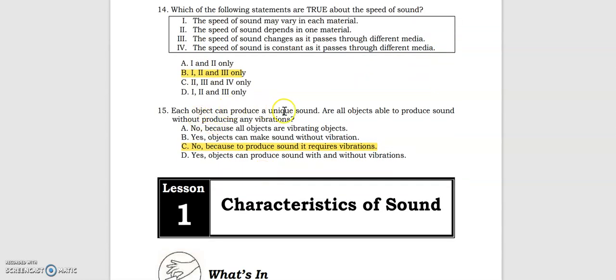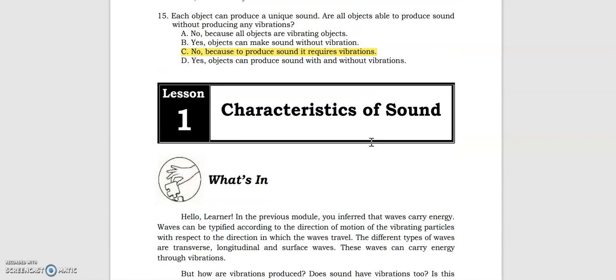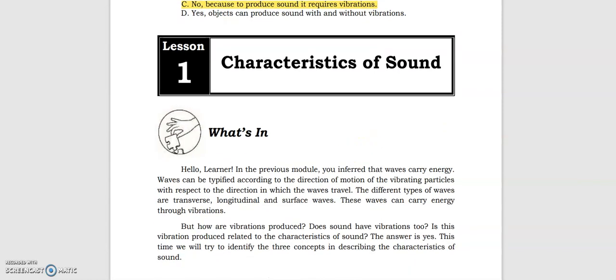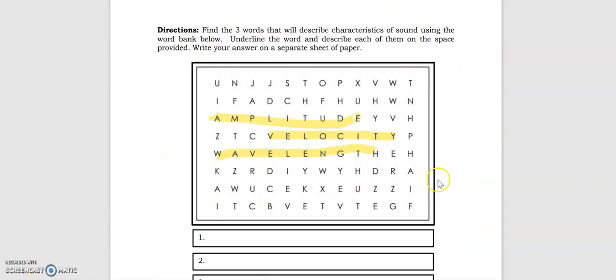Which of the following statements are true about the speed of sound? Statements 1, 2, and 3. Each object can produce a unique sound. Are all objects able to produce sound without producing any vibrations? No, because to produce sound it requires vibrations. Now let's go to our topic right away. It's the characteristics of sounds. Before we proceed, find the three words that will describe characteristics of sound using the word bank below. We highlighted already amplitude, velocity, and wavelength. So they are the words that are used to describe the characteristics of sound.